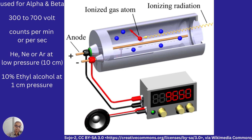When an atom gets ionized, the electron may strike other atoms and create an avalanche of electrons, which could cause a discharge between the cathode and anode. To avoid this discharge, 10% ethyl alcohol at 1 centimeter pressure is used as a quenching agent mixed with the gas.